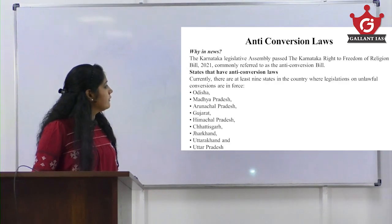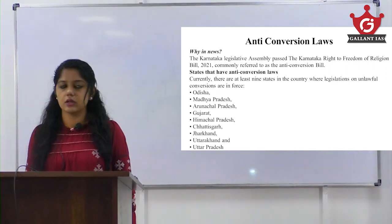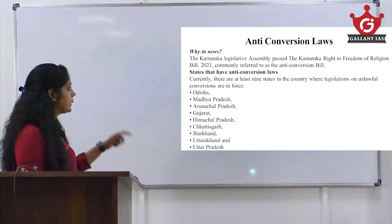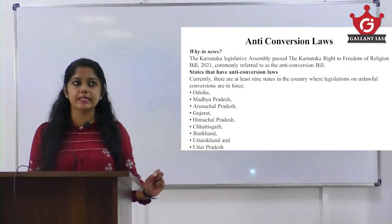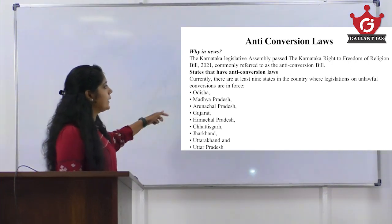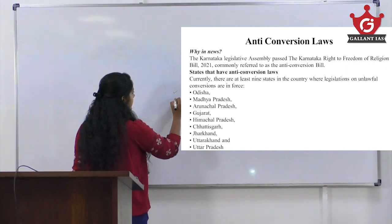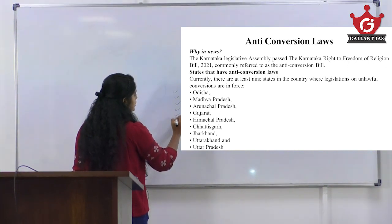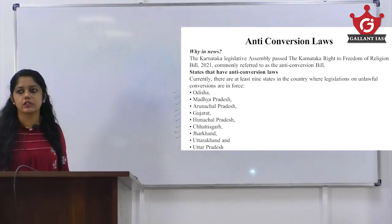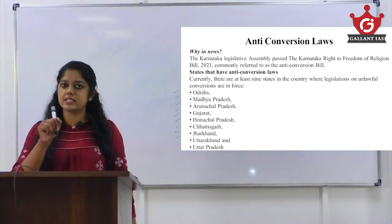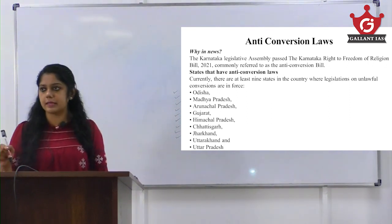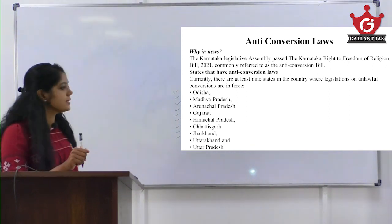The second topic is anti-conversion laws. Recently the Karnataka Legislative Assembly passed the Karnataka Right to Freedom of Religion Bill 2021, commonly referred to as the anti-conversion bill. States having anti-conversion laws: Odisha, Madhya Pradesh, Arunachal Pradesh, Gujarat, Himachal Pradesh, Chhattisgarh, Jharkhand, Uttarakhand, and Uttar Pradesh. You must memorize these states — it is really important.